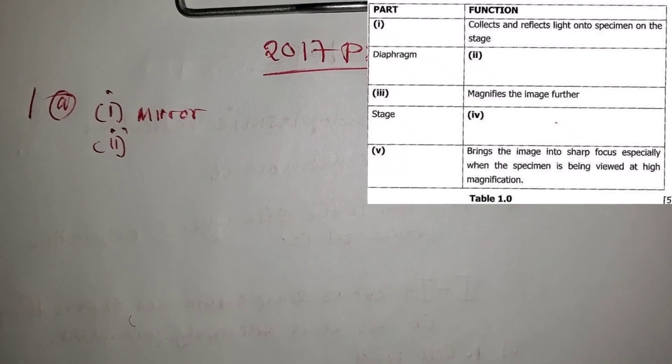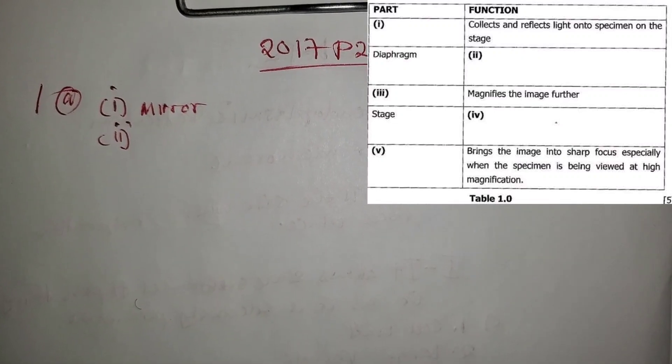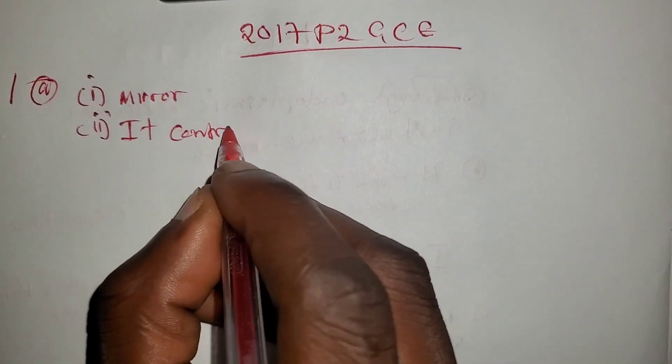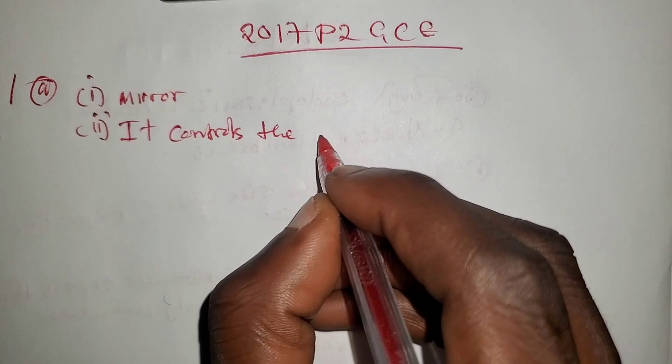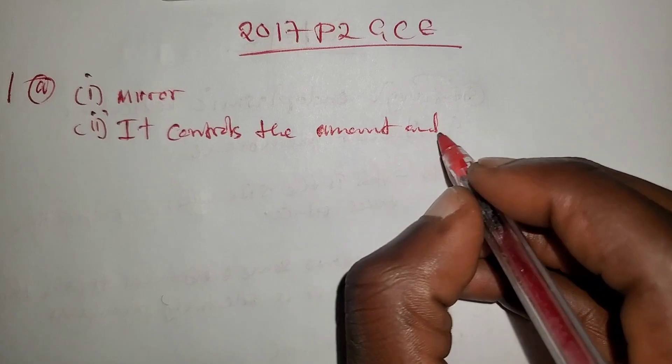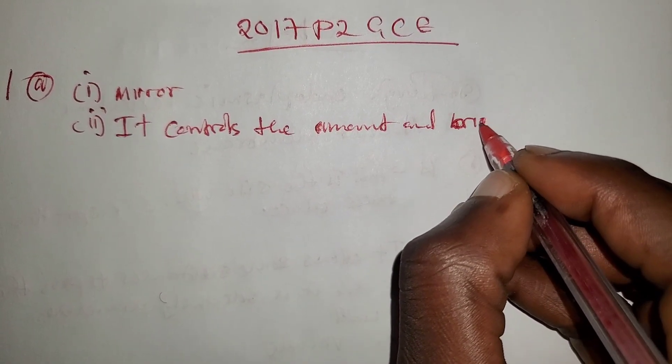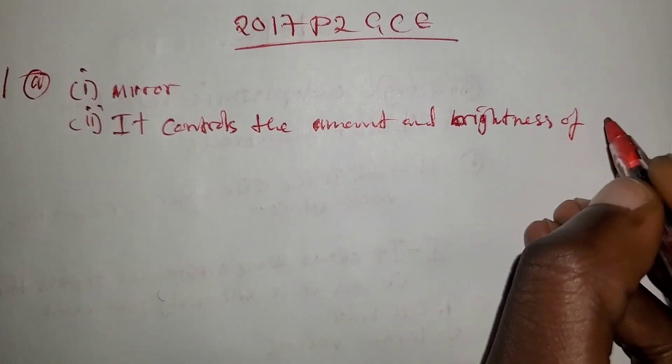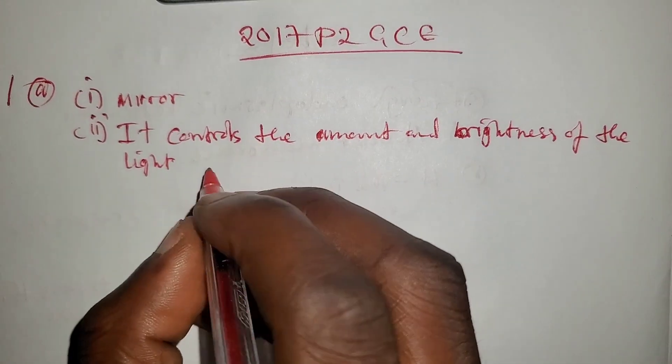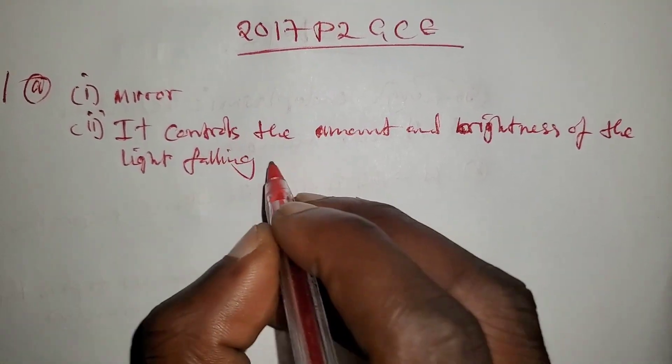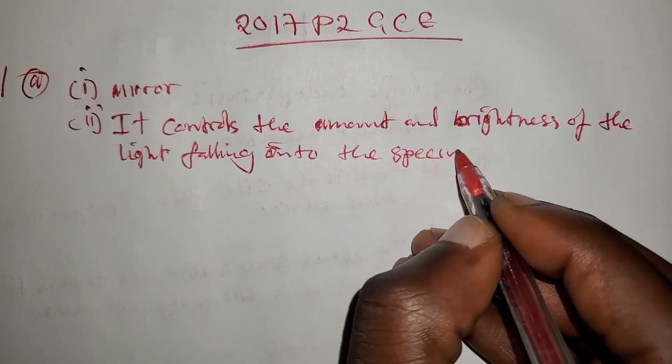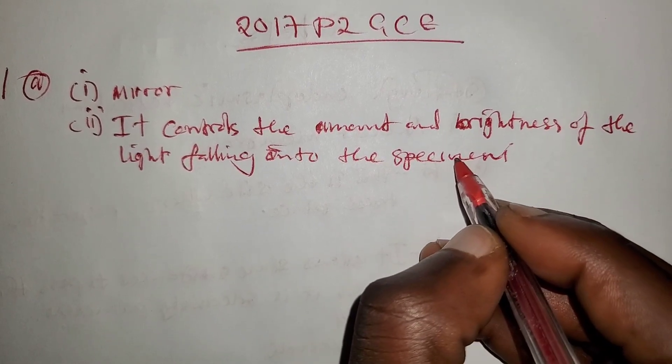Part 2: the diaphragm. What is the function of the diaphragm? The function of the diaphragm is to control the amount and brightness of the light falling into the specimen.